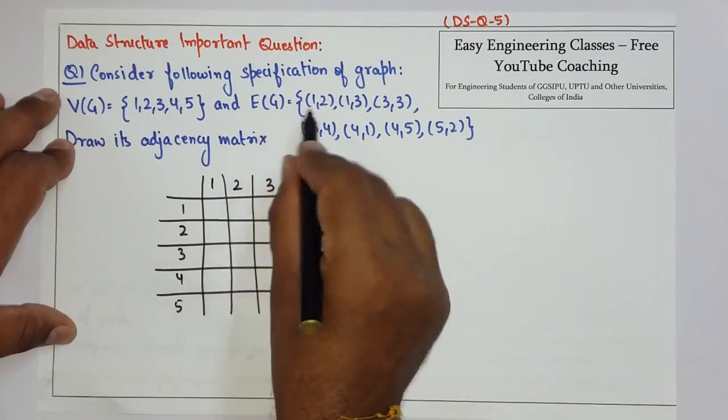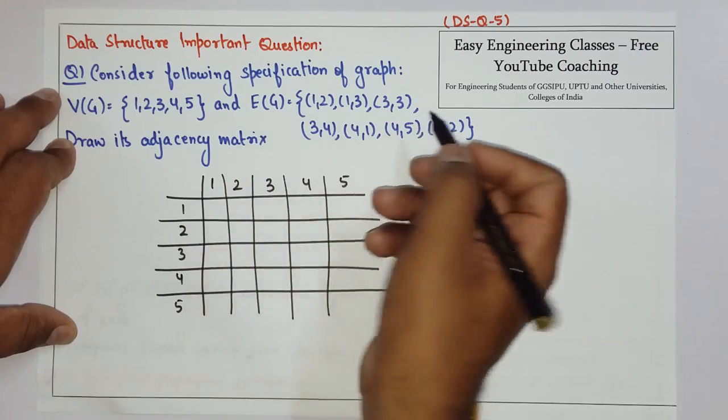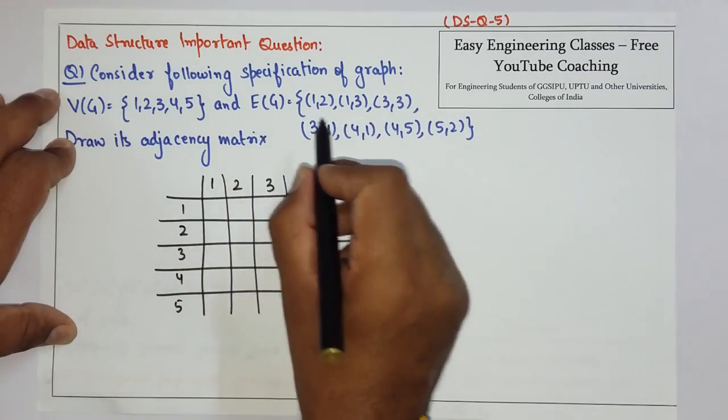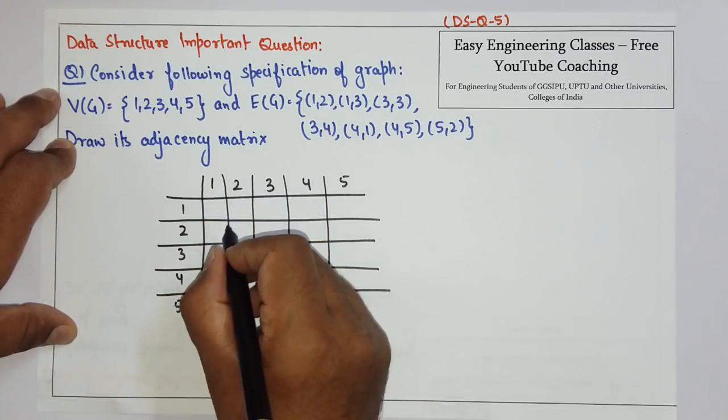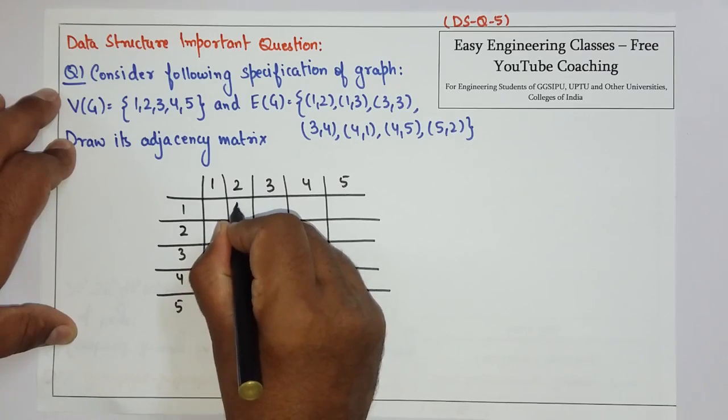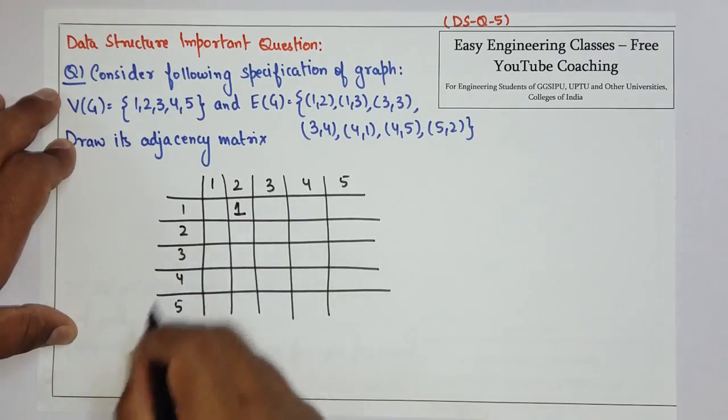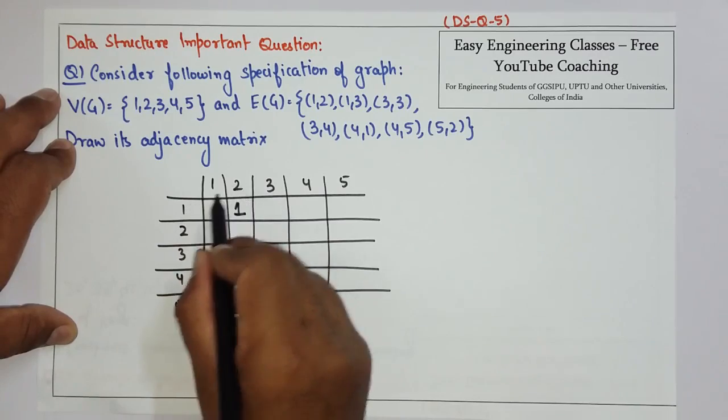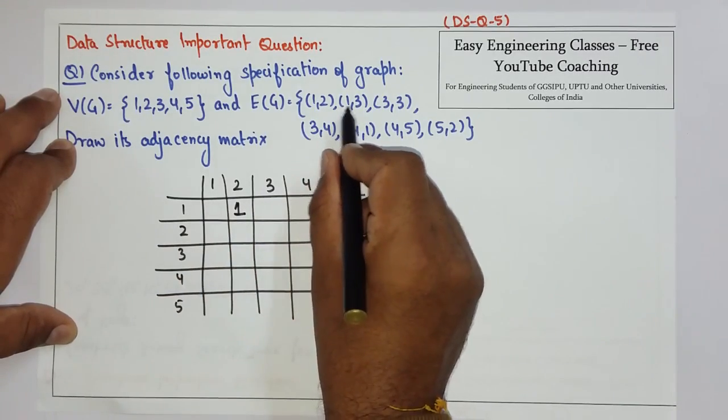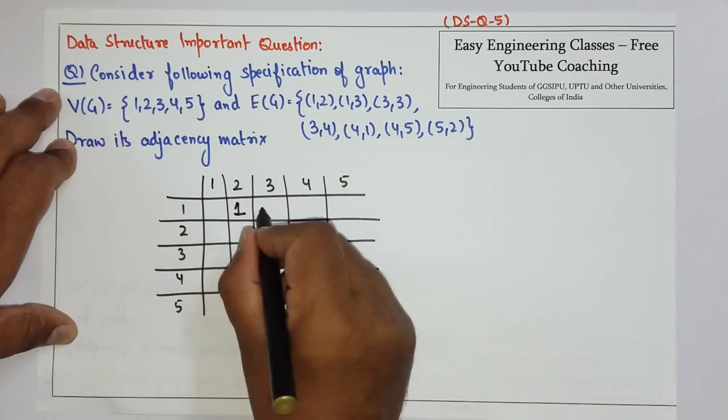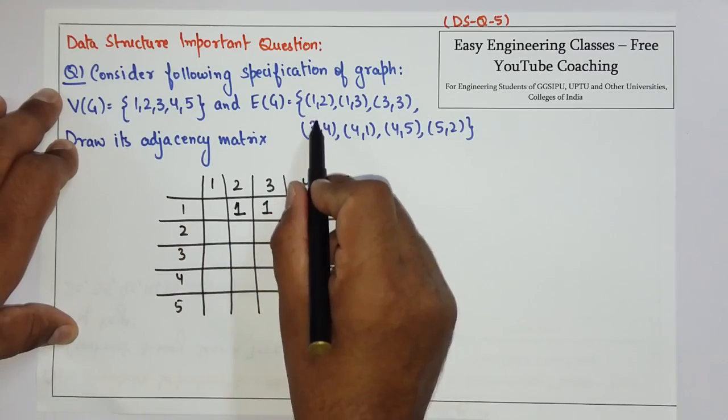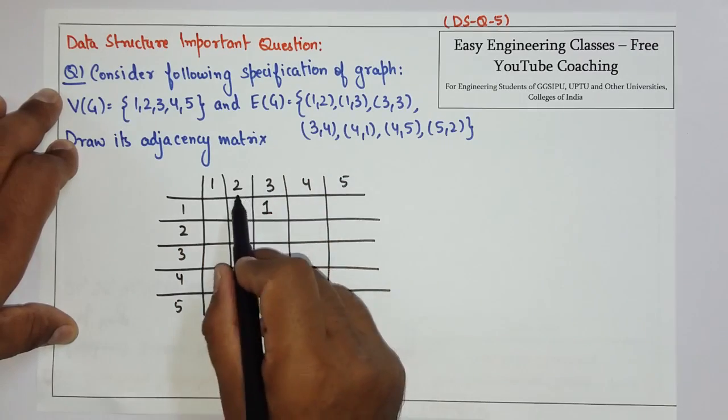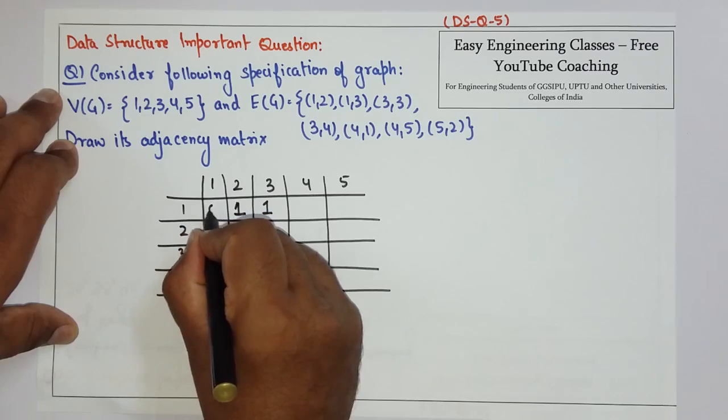Now to fill this matrix use this edges set. It says there is an edge from vertices 1 to vertices 2. So we will put a weight of 1 here from vertices 1 to vertices 2. Similarly from vertices 1 to vertices 3 there is an edge. So put a weight of 1 here. And there is no edge from 1 to any other vertices then 2 and 3. So all the others will be 0.